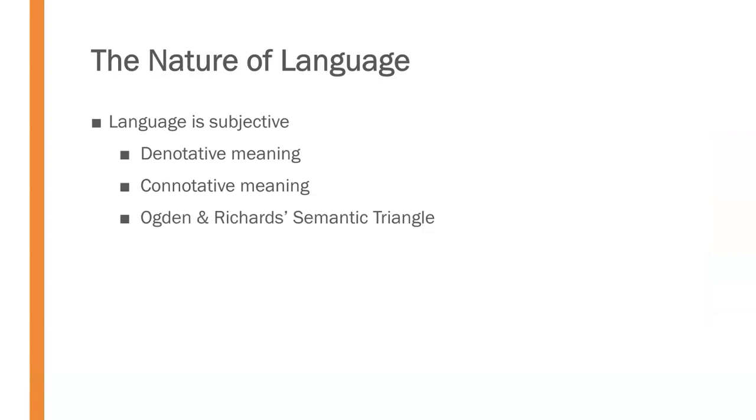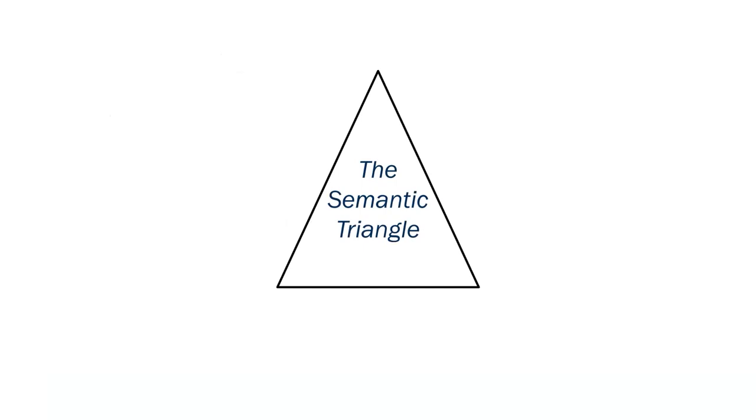The subjective nature of language is illustrated in the semantic triangle developed by Ogden and Richards. As the name would suggest, the semantic triangle is a triangle, with each of the three points representing a different aspect of language. The first identifies the symbol itself, the collection of letters or other markers representing the object of the message. In this example, we will use the word home.